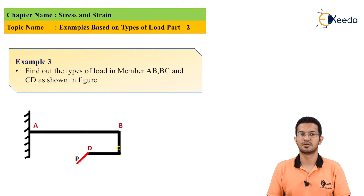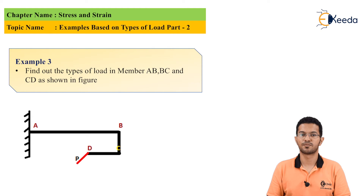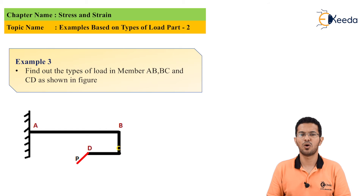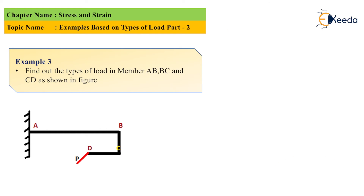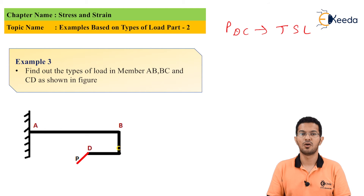Now let's go for the third example. Find out the types of load in members AB, BC and CD as shown in the figure. For member DC, load P is normal to the surface and passes through the longitudinal axis. Hence, load P is transverse shear load (TSL). For member BC, load P is normal to the surface but does not pass through the longitudinal axis. Hence, load P is eccentric transverse shear load (eccentric TSL).